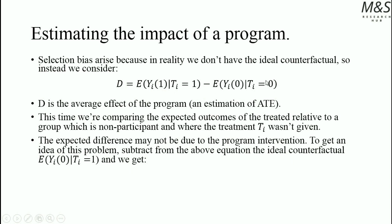This equation tells us the average effect of the program as an estimation of the average treatment effect. However, notice a difference: we are not using the same counterfactual — there are non-participants when the treatment was given. Instead, we are using non-participants when the treatment wasn't given, as the control group. This time we are comparing the expected outcomes of the treated relative to a group which is non-participant and when the treatment wasn't given. The expected difference may not be due to a program intervention, so the result may be biased.